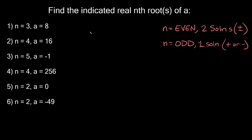The way we can set this up is by saying x — just some random number — raised to the n is equal to a. So n is our exponent; all these n's are just exponents. And a is the solution; all these a's are solutions. So what we're looking for in this problem are the roots — this x, the base number, is your root.